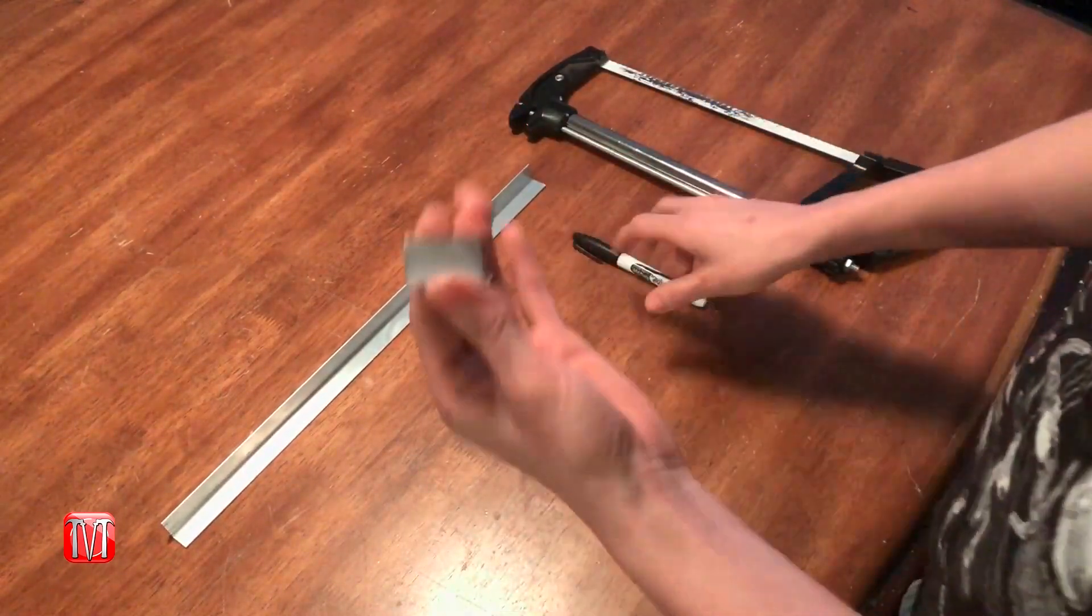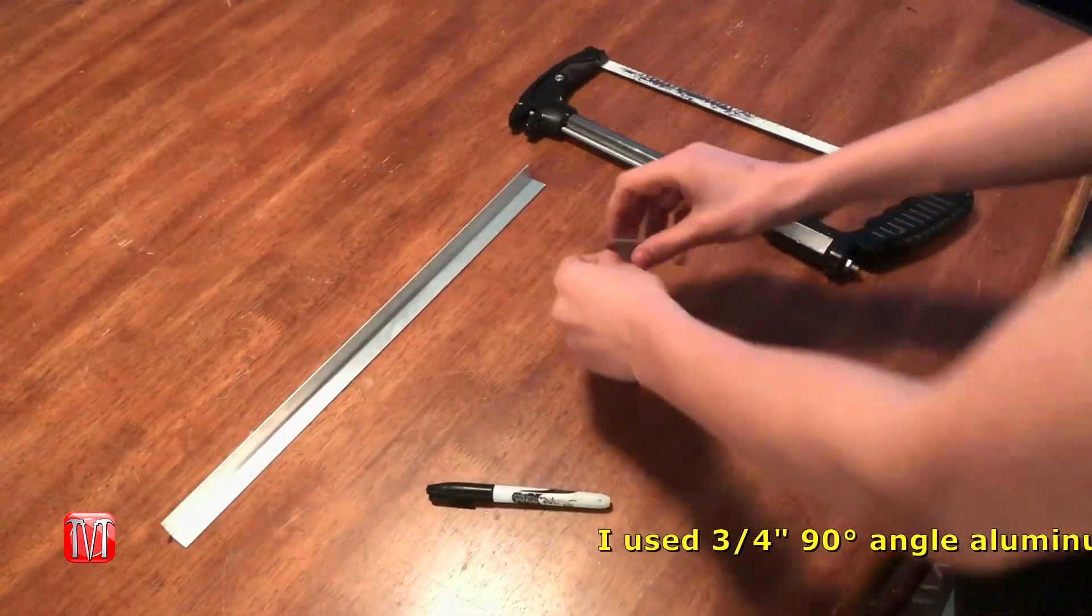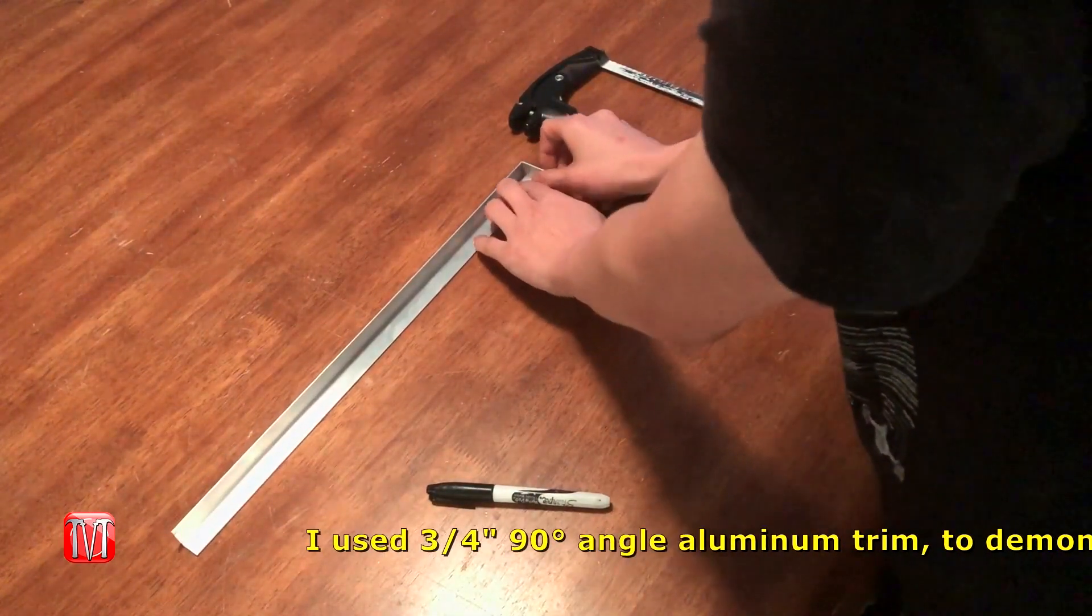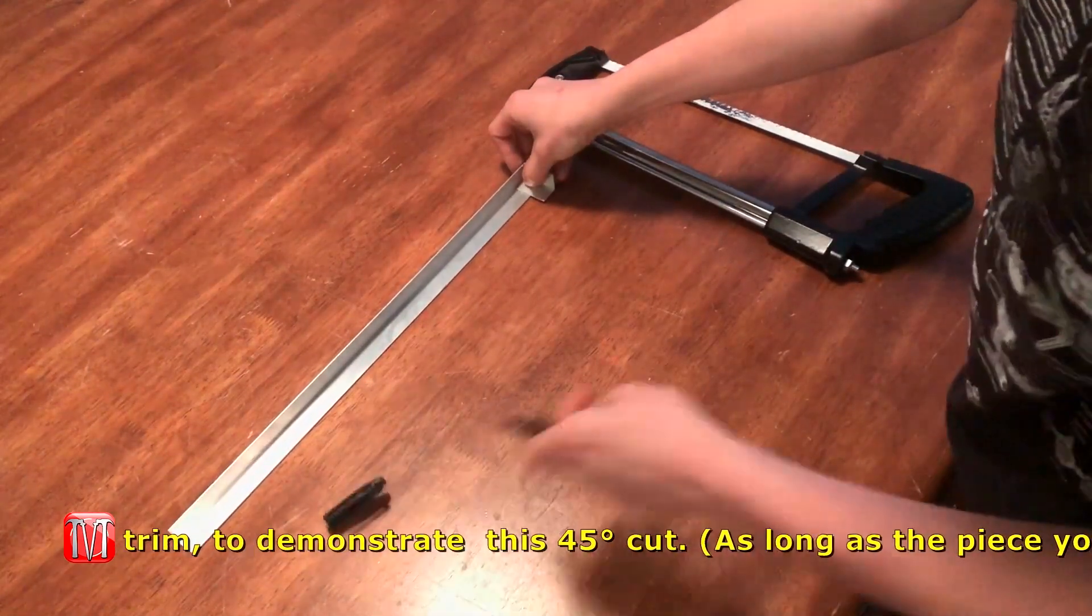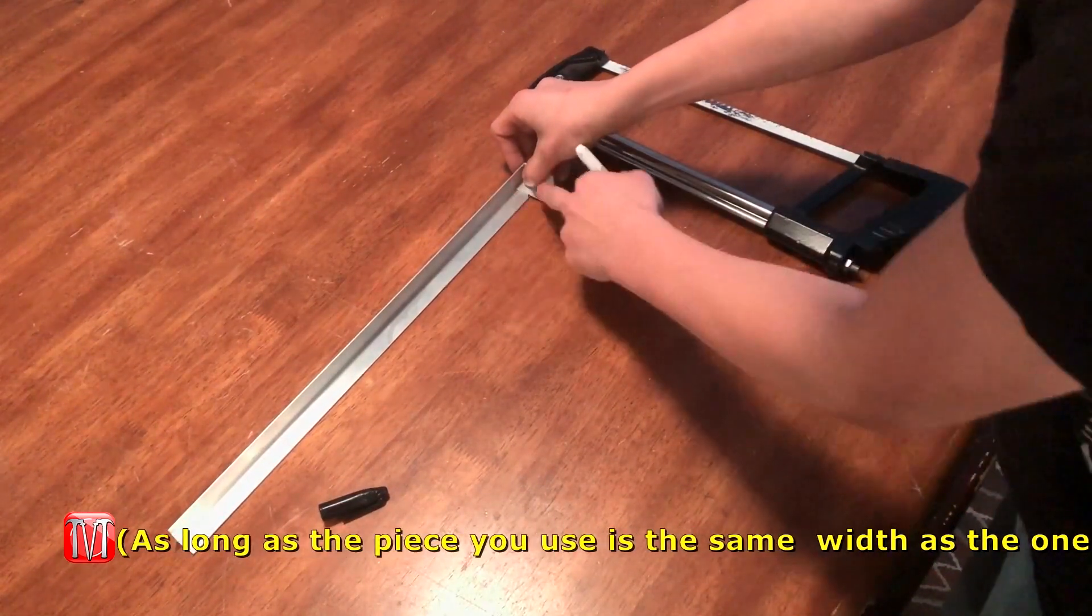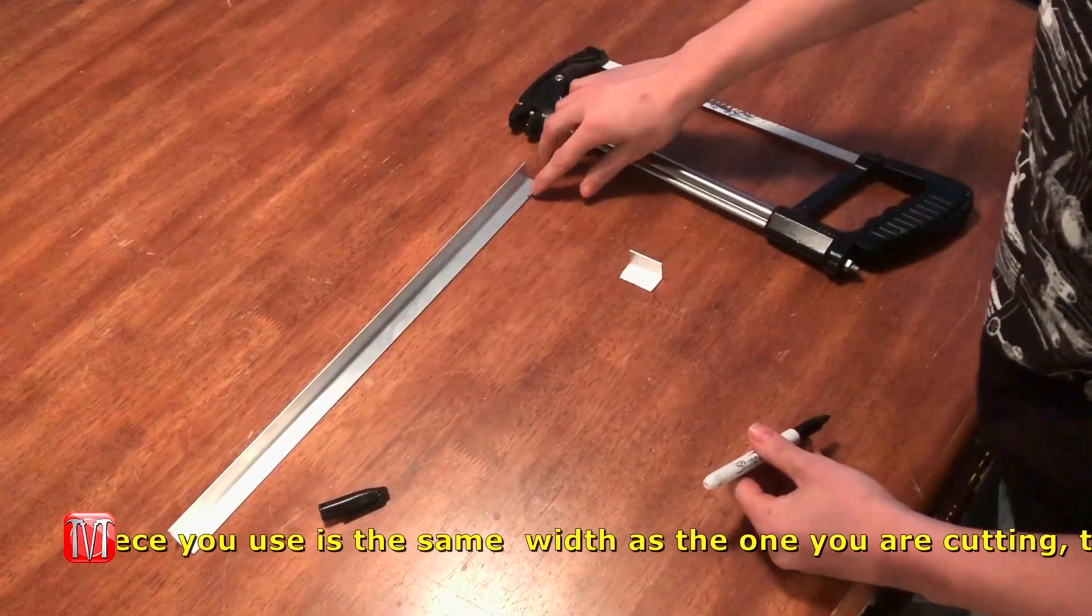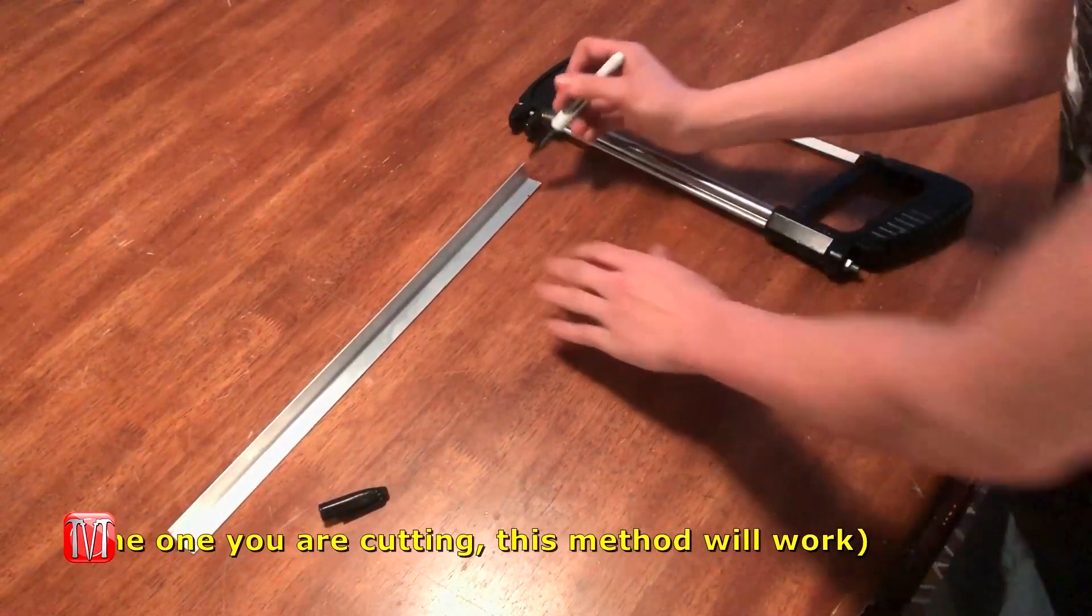First, we're going to start out with the outward corner cut. With that, all you need is to take a piece of the same material, line it up at the edge of the piece that you want, and make a mark with the marker right here where the two pieces meet. Then you're going to angle it from there to the corner.